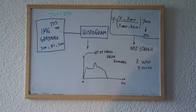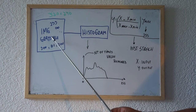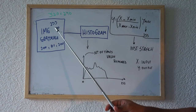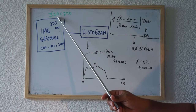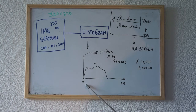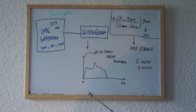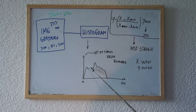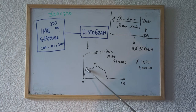Let's talk about histograms. Consider a grayscale image with pixel values from 0 to 255 and a resolution of 320 by 240. The histogram is a plot showing the number of times a particular pixel value repeats in the image. So for a grayscale image you get a plot that shows, for instance, how many times the value zero appears.